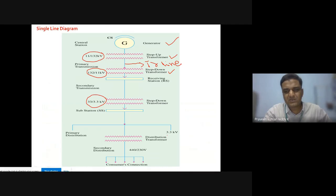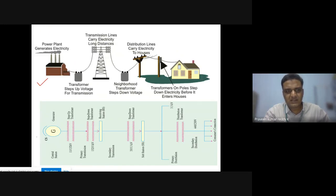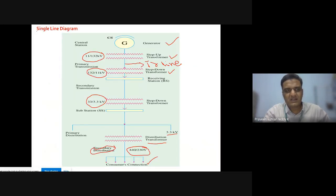3.3 kV primary distribution. One more distribution transformer step down to 440 or 230 volts. This is secondary distribution, like normal houses, consumers connection. This picture is nothing but this thing. This thing is shown on the paper, we show like a diagram like this. This diagram is called as single line diagram. Entire system, we are showing it as a single line, single line diagram. This is the meaning of the transmission and distribution and single line diagram. Hope you got the basic idea. Thank you very much for listening.